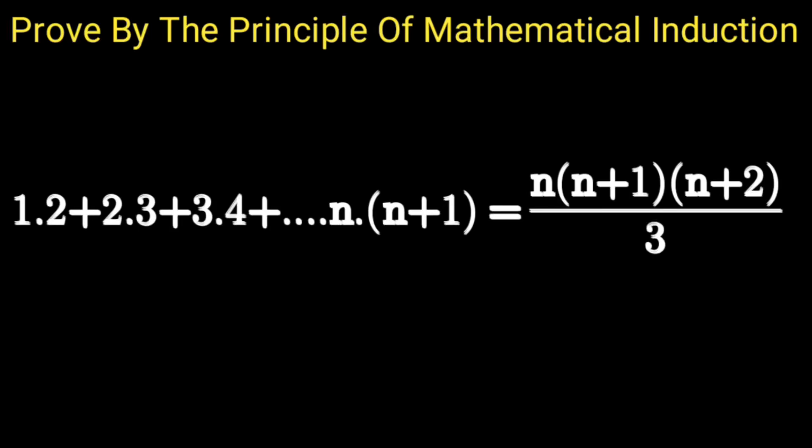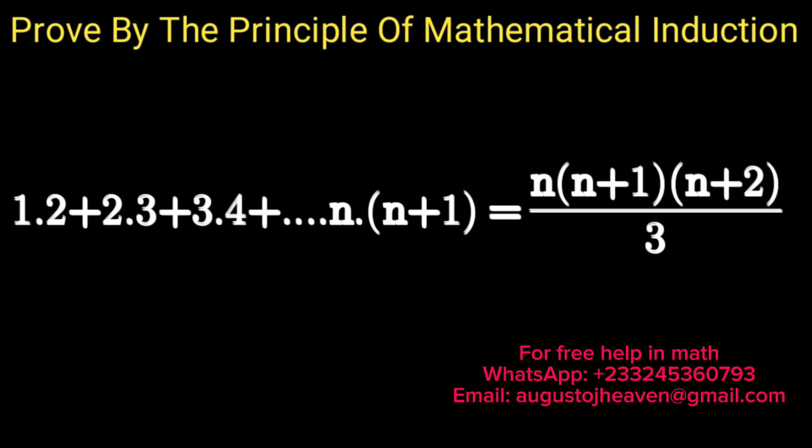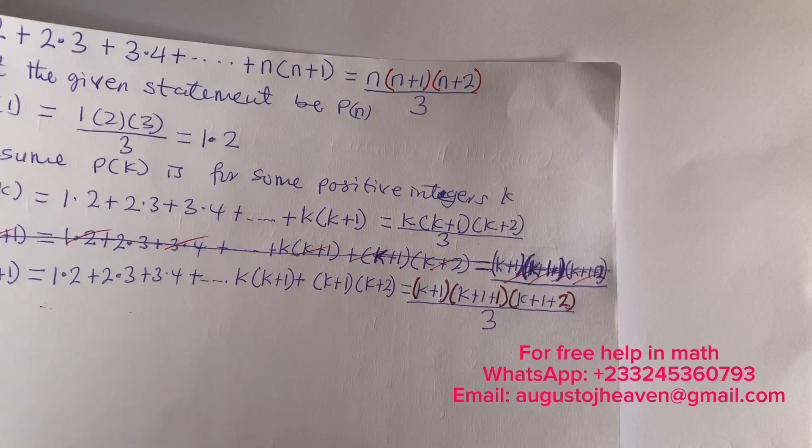In this lesson we are going to prove using the principle of mathematical induction that for all n in the natural numbers: 1×2 + 2×3 + 3×4 + ... + n×(n+1) = n(n+1)(n+2) divided by 3. Join me as we go through this step by step. Please remember to like, share, subscribe and leave your comments.